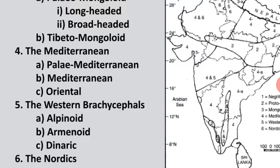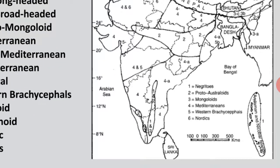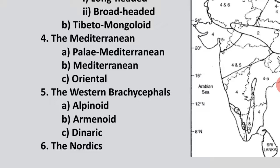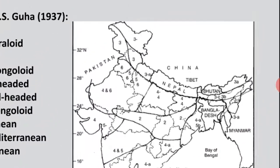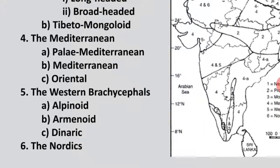Group five is Western Brachycephalic, found in Haryana and West Bengal, with three sub-types: Alpinoid, Armenoid and Dinaric. Group six is Nordic, found in northern India below the Himalayan area — in Punjab, Haryana, western UP and some parts of Rajasthan.